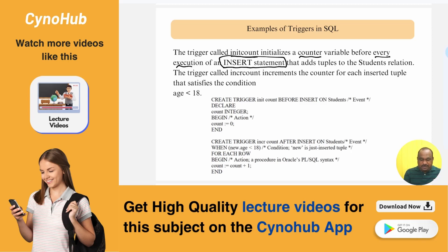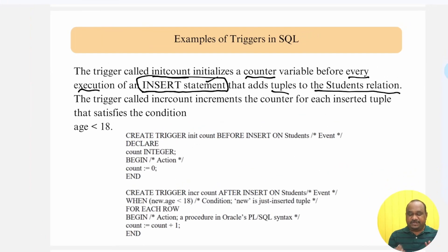What is that? When before every execution of the statement that adds tuples to students relation. Tuple means add one record. Then, the trigger called increment the counter for each inserted tuple that specifies the condition. Meaning that based on the condition, whenever an insert statement executes, then execute this particular trigger. See the example.